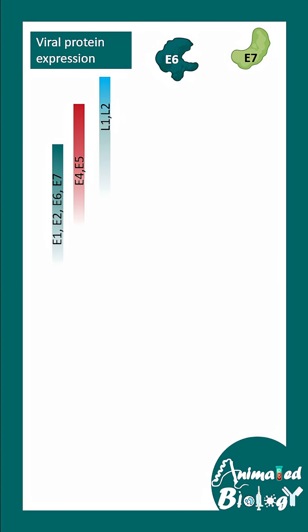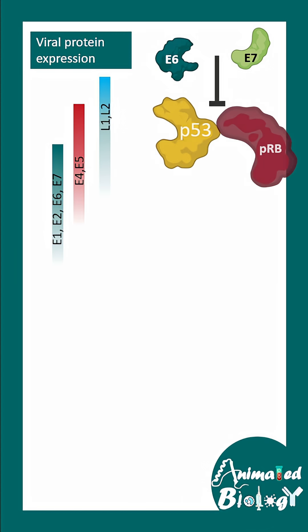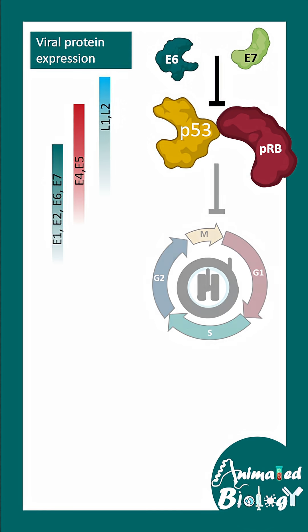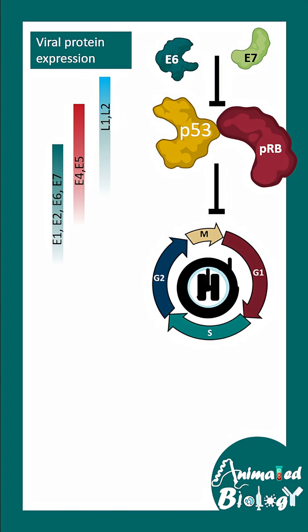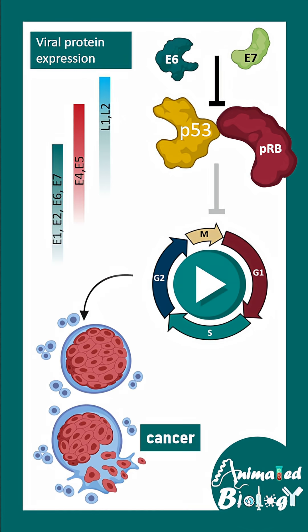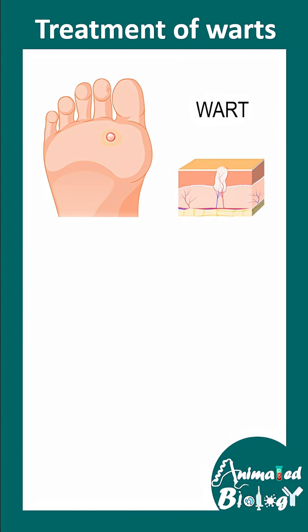In this timeline, several proteins are produced, but most importantly, the E6 and E7 viral proteins can block the tumor suppressors P53 and pRb. This leads to an aberrant restart of the cell cycle, resulting in uncontrolled cell division and cancer.